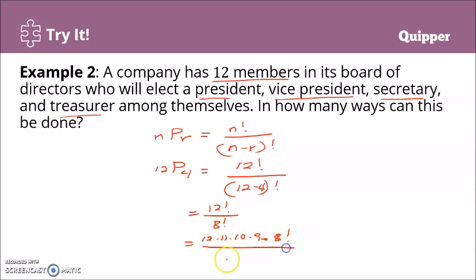Cancel out 8 factorial. We just have to solve 12 times 11 times 10 times 9. You can have 12 times 11, that's 132, times 10 is 1,320, times 9. That would be 11,880.